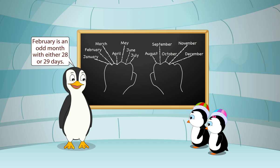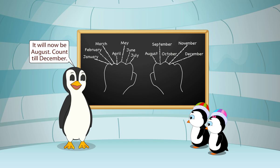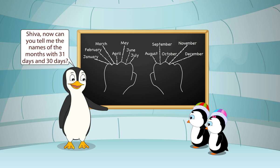February is an odd month with either 28 or 29 days. On reaching the knuckle of the pointer finger for July, go to the knuckle of the pointer of the right hand — it will now be August. Count till December.